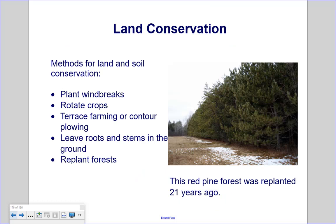Methods for land and soil conservation include planting windbreaks, rotating crops, terrace farming or contour plowing, leaving roots and stems in the ground, and replanting forests. This red pine forest was replanted 21 years ago.